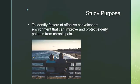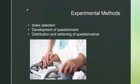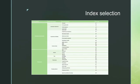The study purpose of this research is to identify factors of an effective convalescent environment that can improve and protect elderly patients from chronic pain. In terms of experimental methods, it can be divided into three major parts: index selection, development of questionnaires, and distribution and retrieval of questionnaires. The questionnaire is divided into two parts — convalescent environment assessment and chronic pain assessment — with a total of 32 indicators.